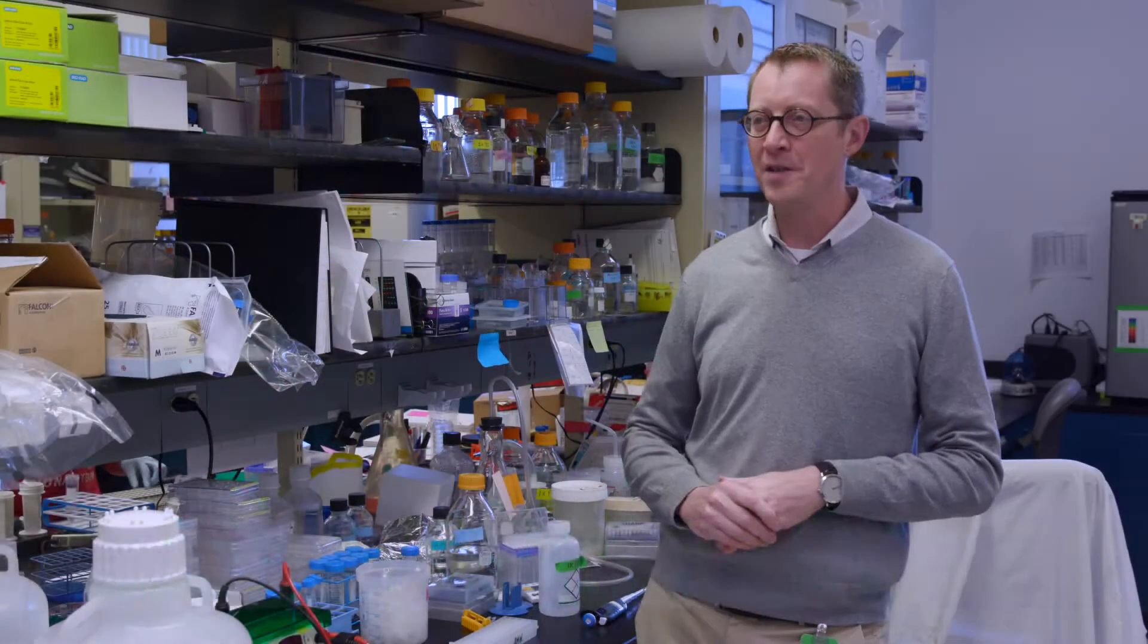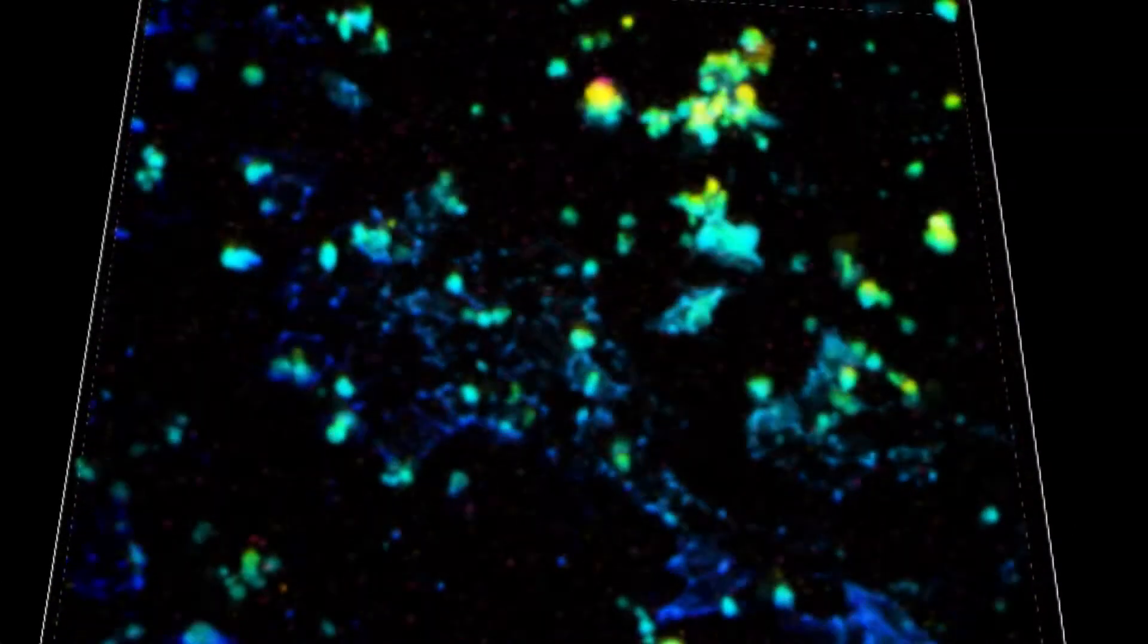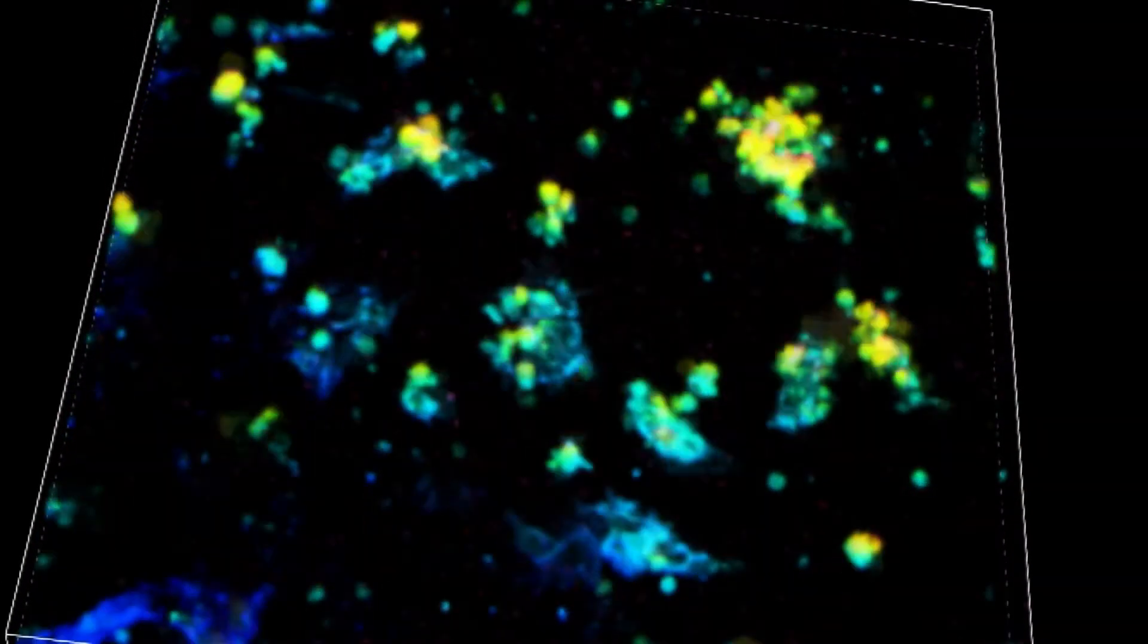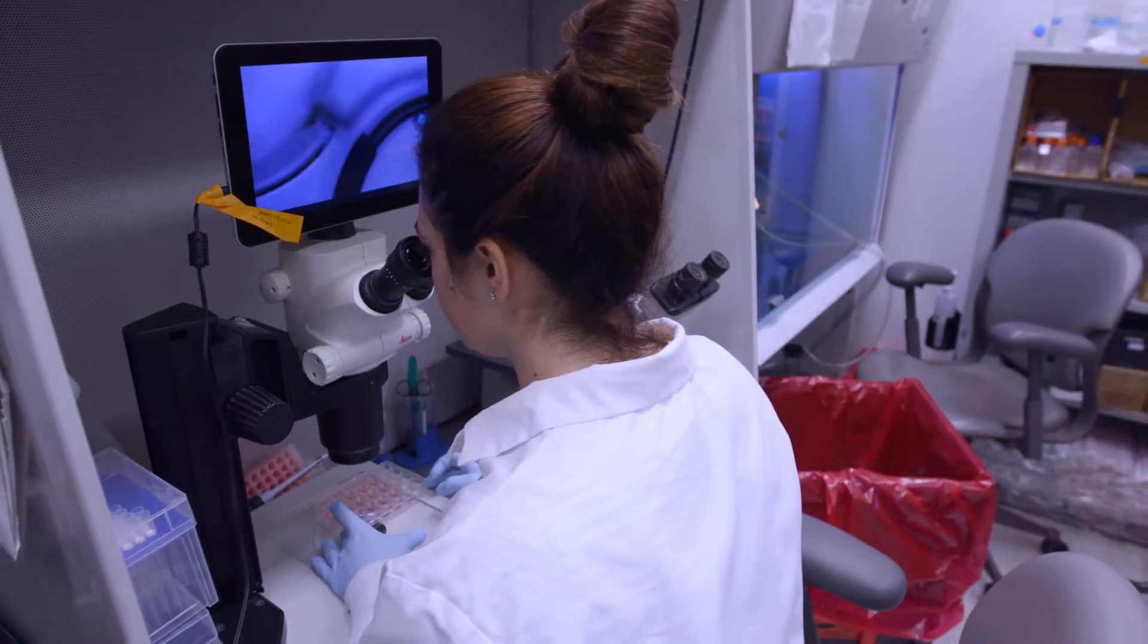Our scientists are bioengineering stomach, colon, liver, and even intestinal tissue that has functioning nerves. This is really a tremendous advance for precision medicine. We can use a child's own cells to grow their GI tissue in the laboratory and we can use this to study that child's disease and find out clues on how to treat their condition.